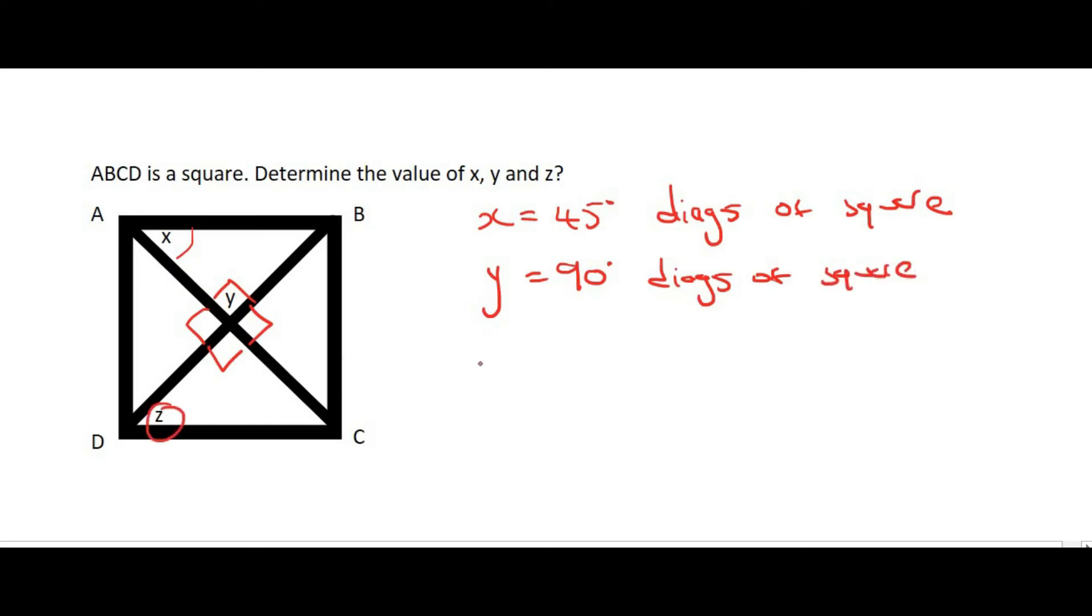And then z, very easy, is also going to be 45 degrees, because this angle here is cut in half. And so, once again, that's going to be diags of square.